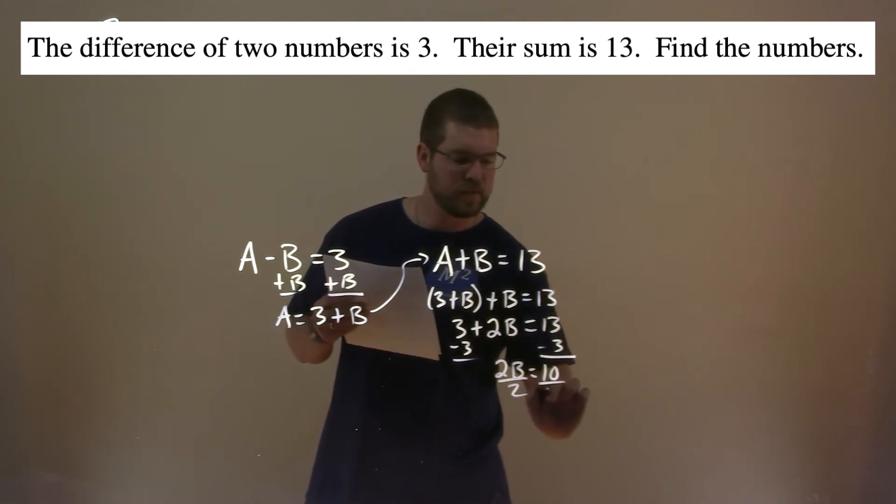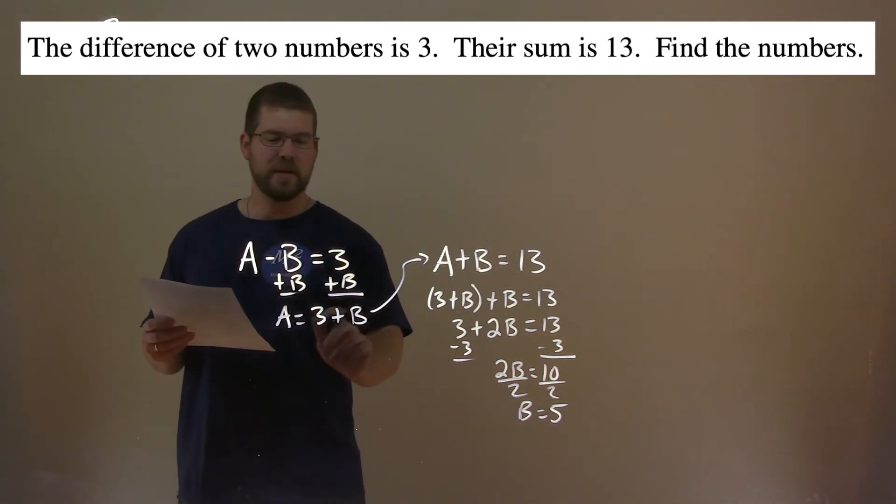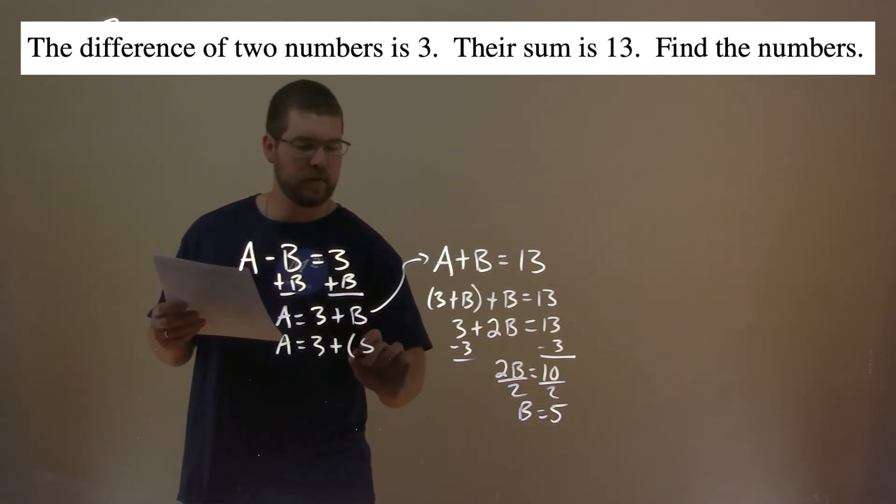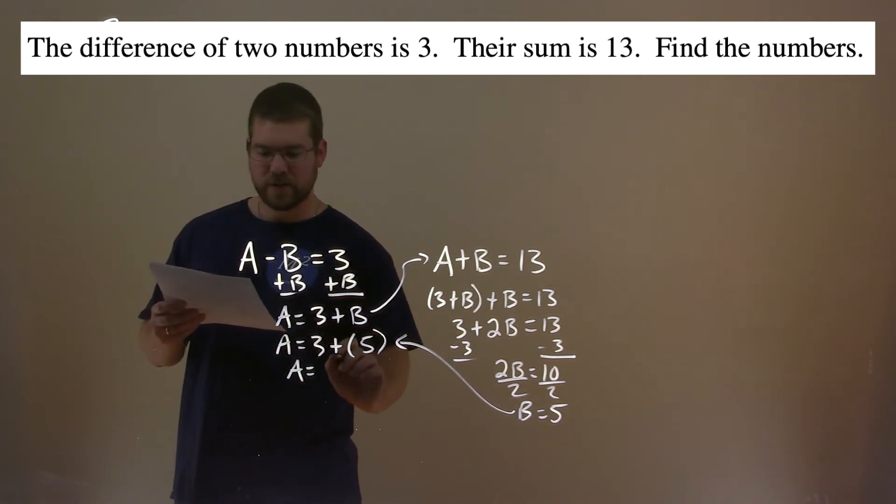Divide both sides by 2, and B equals 5. 10 divided by 2. With that information, we plug that into B here. A equals 3 plus B, which is 5. And now we're solving for A to get the A value. A equals 3 plus 5, which is 8.